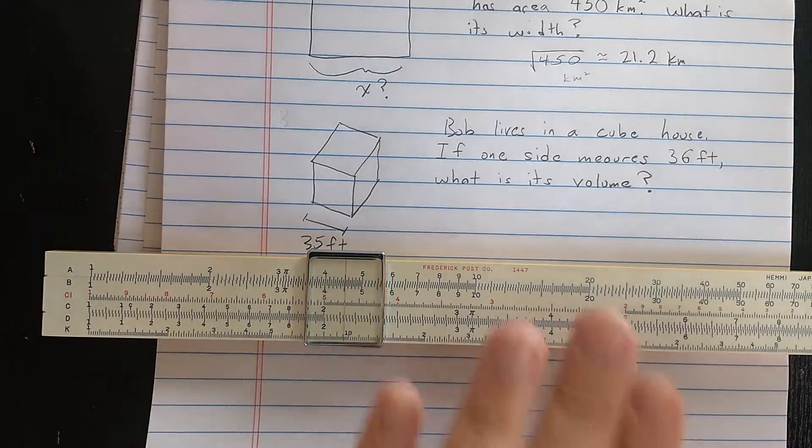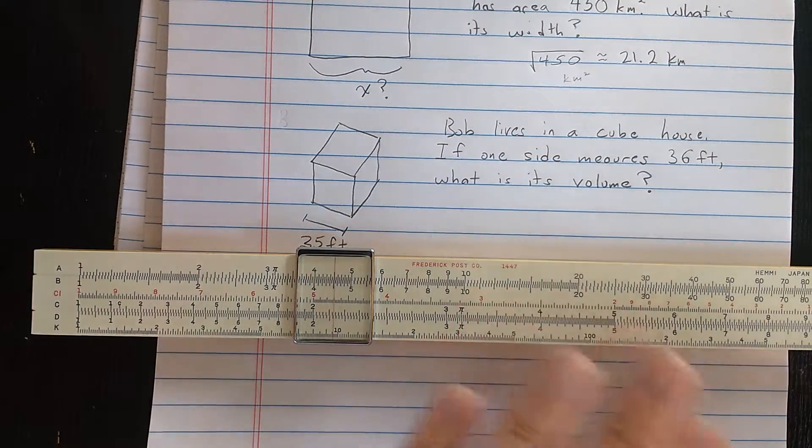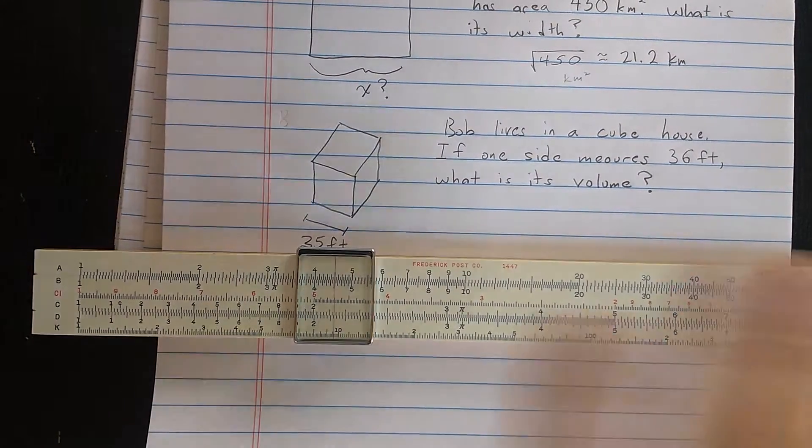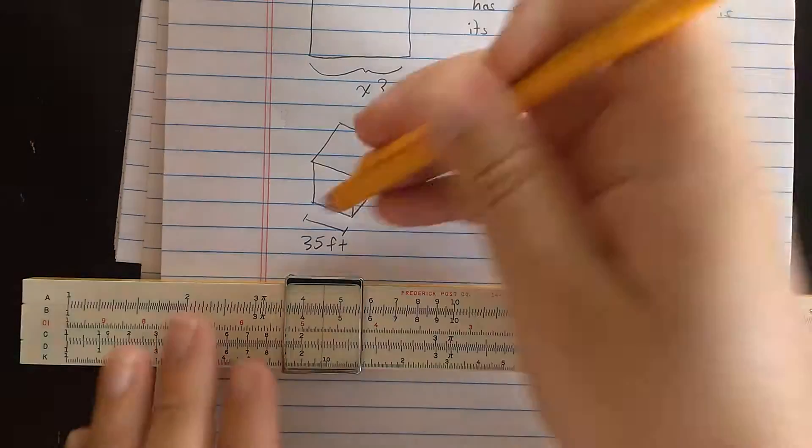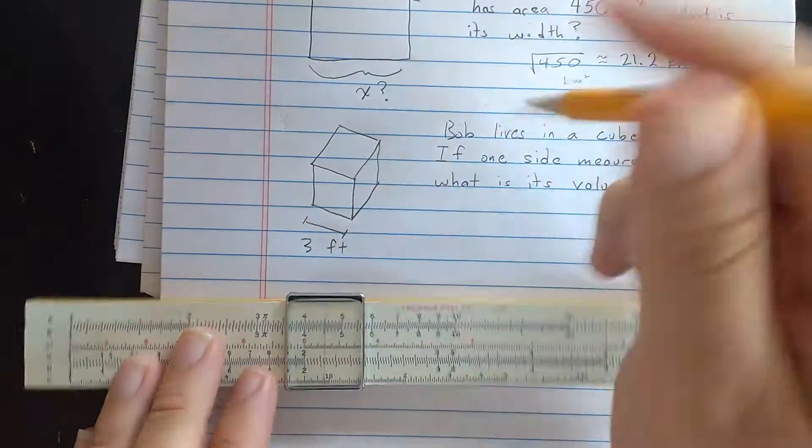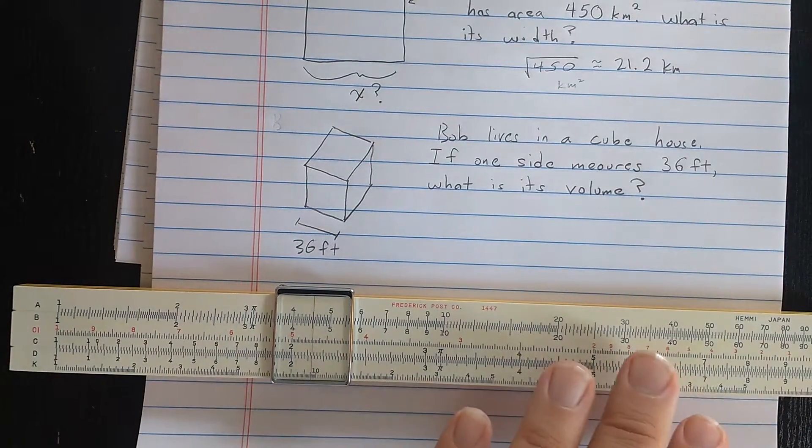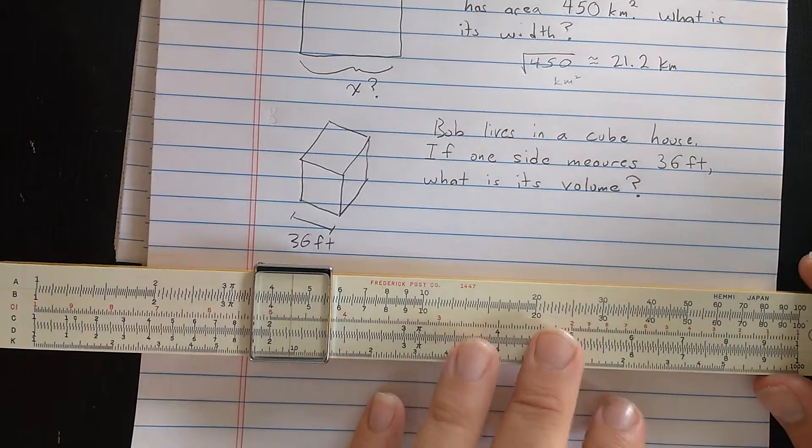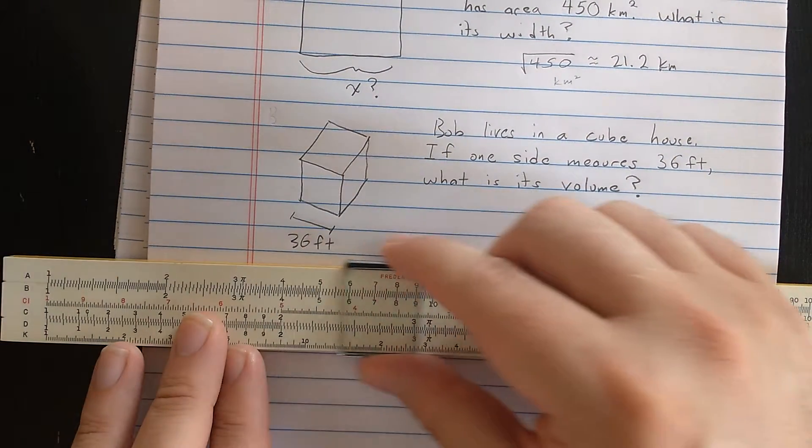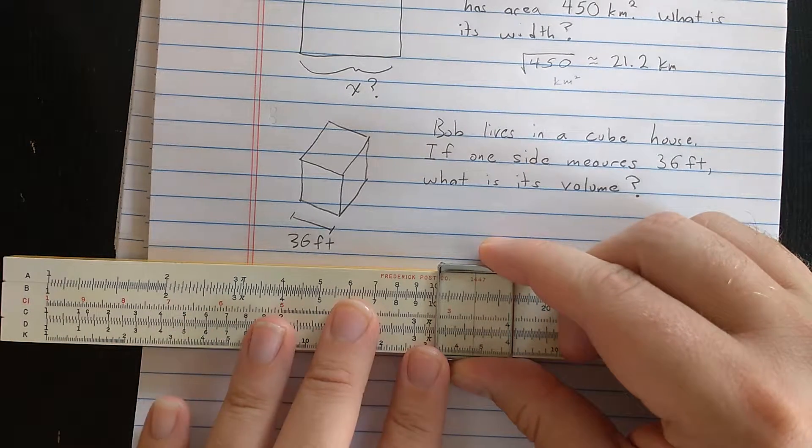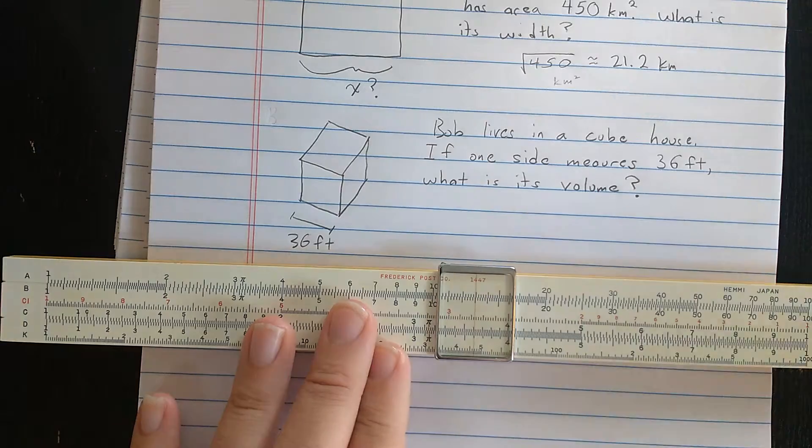Well, the last problem. Bob lives in a cubic house. So it's a house the shape of a cube. If one side measures 36 feet, what is the volume of his cube house? This is, I changed the numbers here. 36 feet. Well, I'm going to cube. So all I need to do is find 36 on the D scale, and then read the results on the K scale.